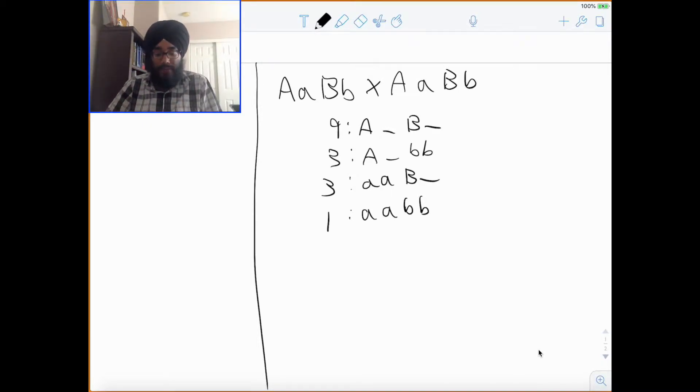If I have a 12-3-1, which is dominant epistasis, then it would be these. So, automatically, you guys need to know that 12-3-1 is dominant epistasis, 9-3-4 is recessive epistasis, and 9-2-7 is complementary epistasis.